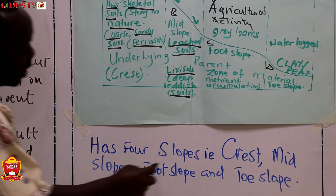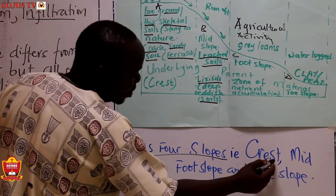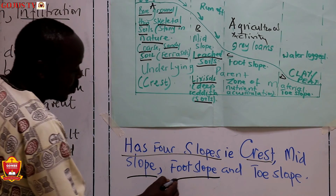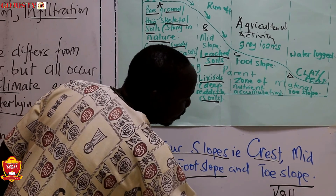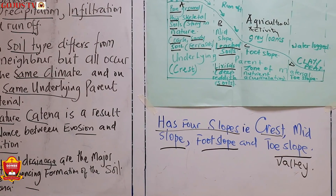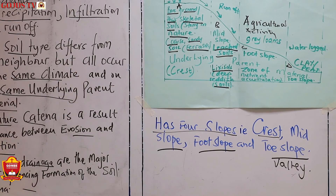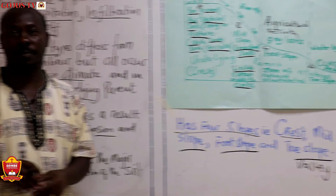A catena has four slopes: a crest, which is the top of the slope; a mid slope; a foot slope; and a toe slope, which we sometimes call the valley. The profile, on the other hand, does not have slopes — the profile has layers, while the catena has slopes. Thank you so much.